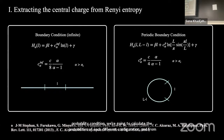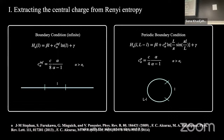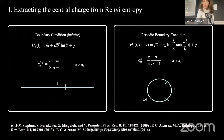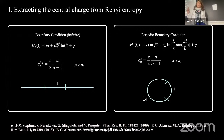At the critical point, the scaling has a linear term, which is non-universal, but it also has a sub-leading term that is logarithmic with the subsystem size. It is conjectured that the coefficient of this logarithmic term contains information related to the central charge. The same calculation applies for the periodic boundary condition.